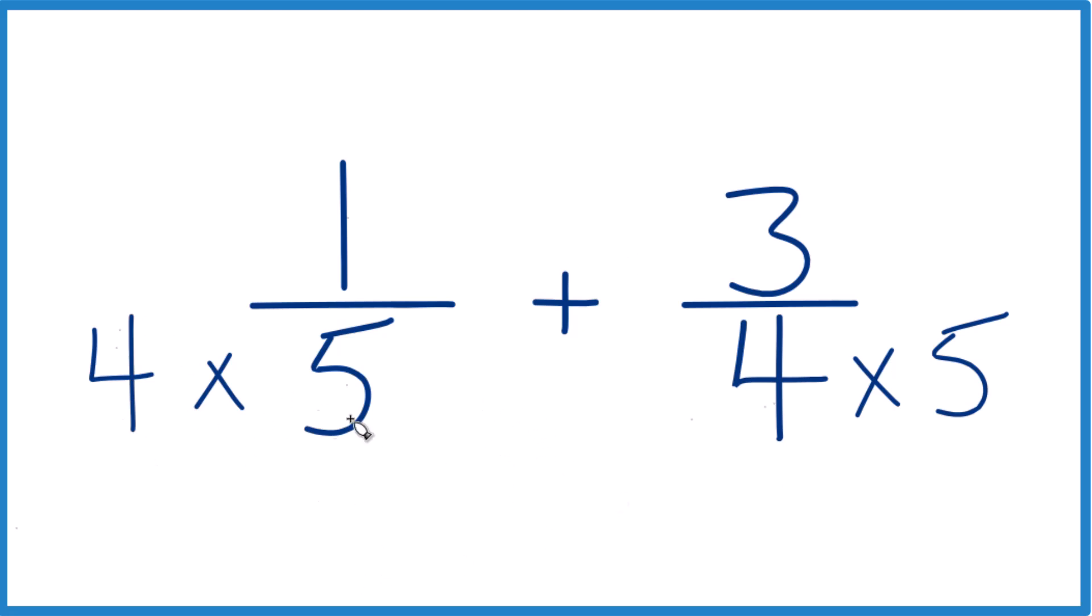But we can't just multiply the denominator by a number. We also have to multiply the numerator by that number. That's because 4/4 is 1. So here we're just multiplying by 1. We're not going to change the value, just the way it's written. Over here, let's multiply by 5, so we have 5/5, which is 1.